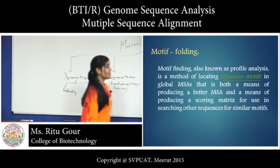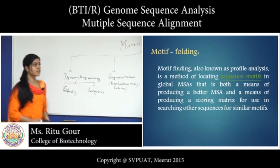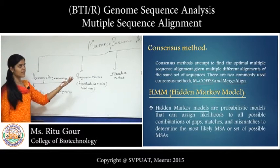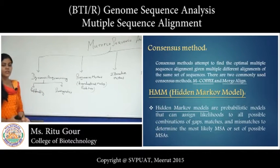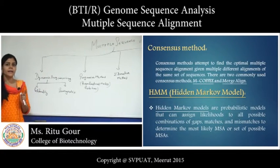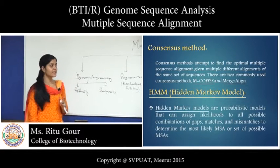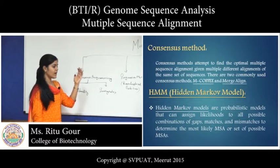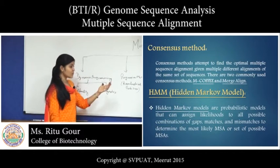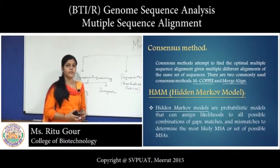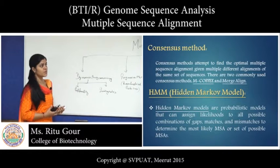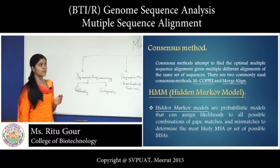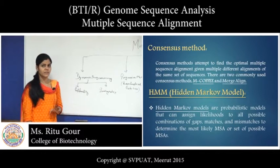Next is consensus method. Consensus sequences are those sequences which can change during evolution. Consensus method is that method which provides more than one result at a single time for a single set of multiple sequence alignment. Consensus method requires more than two tools. First is M-Coffee and T-Coffee — these are the tools which are mainly used for the consensus method — with which we can find out more than one result of a single set of multiple sequence alignment.